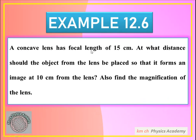A concave lens has a focal length of 15 cm. At what distance should the object from the lens be placed so that it forms an image at 10 cm from the lens? So the image distance Q we have to find as 10 cm, and the object distance P we have to determine.